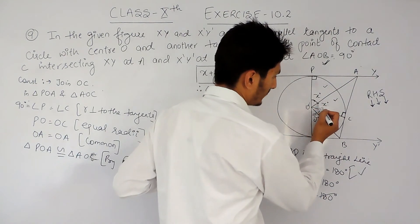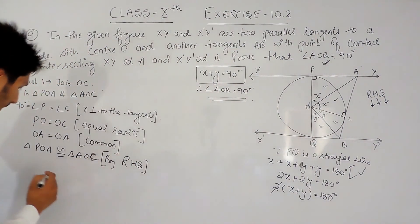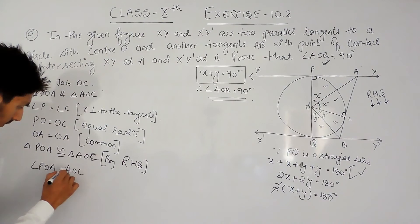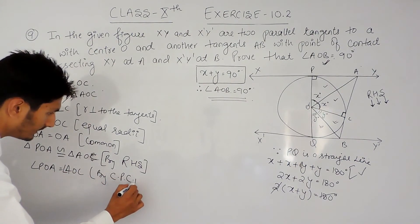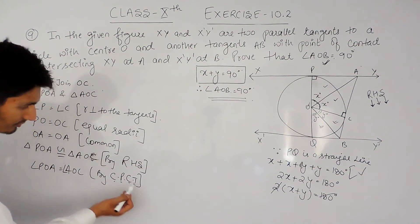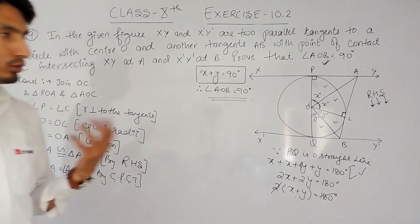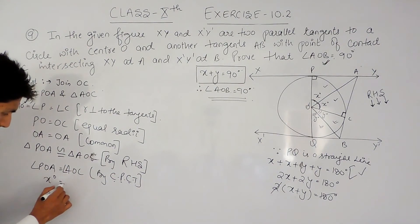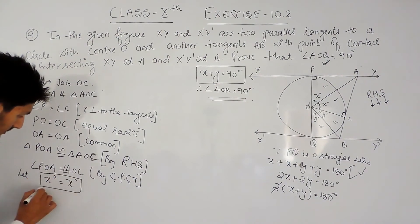Since these two triangles are congruent, their corresponding parts must be equal. By CPCT (Corresponding Parts of Congruent Triangles), angle POA must equal angle AOC. If angle POA equals x degrees, then angle AOC also equals x degrees. This is our first equation.